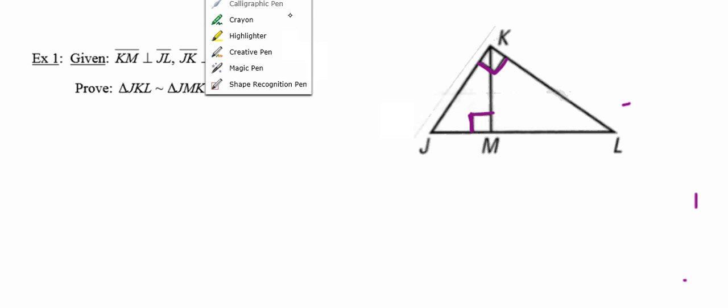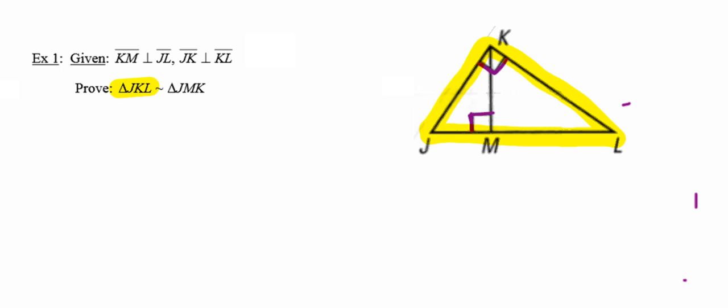We are trying to prove triangle JKL, the big guy, similar to triangle JMK. Triangle JMK is that little blue one. So in other words, I need to have two angles in the big yellow triangle congruent to two angles in the little blue triangle.